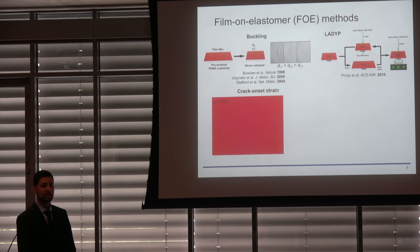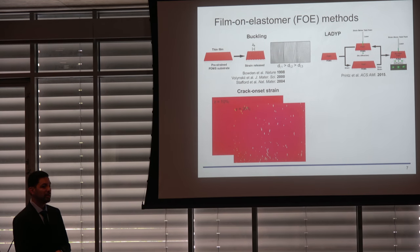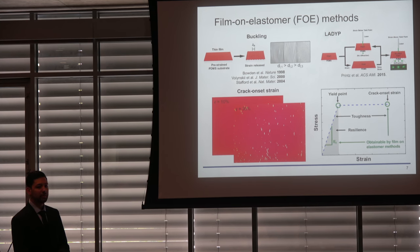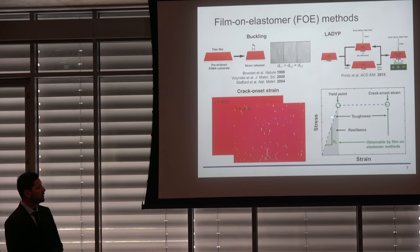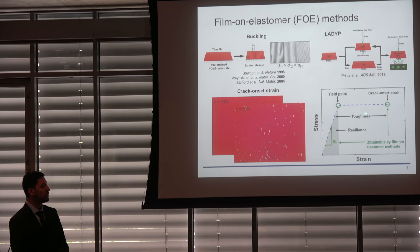A third technique is crack onset strain, where thin films on PDMS substrates are stretched in increments of 1%. Upon surpassing a threshold, cracks appear within the film, and we label this as the crack onset strain. These three methods together can roughly estimate key features of a stress-strain curve: mechanical buckling gives the elastic modulus, the yield point method gives the onset of plastic deformation, and crack onset strain gives the strain at first failure. There is no film-on-elastomer method that captures the full plastic behavior between yield point and crack onset strain.